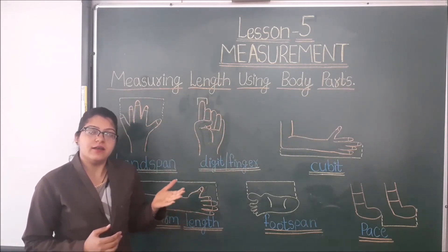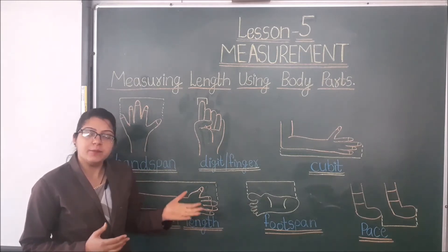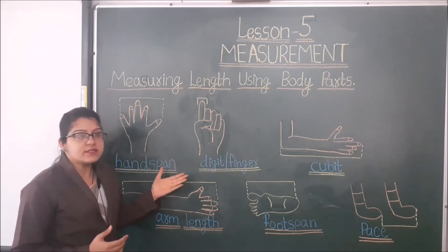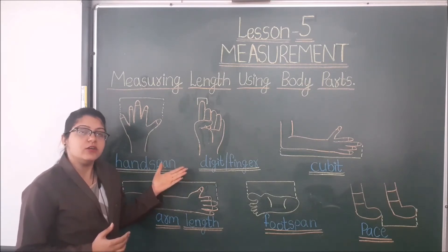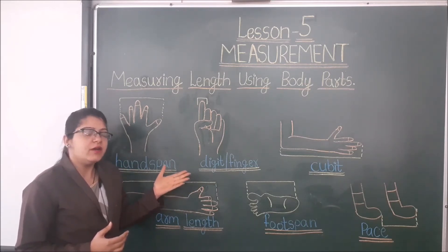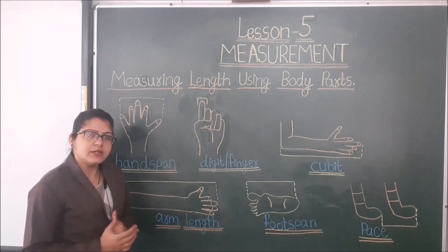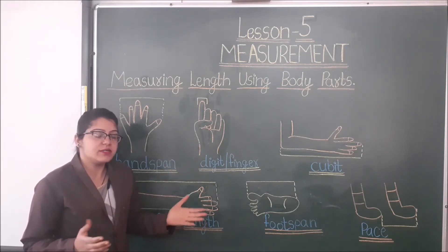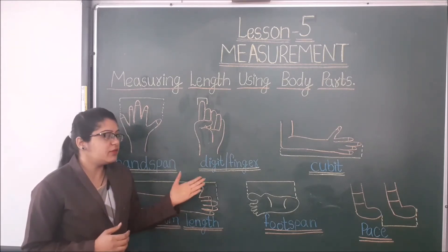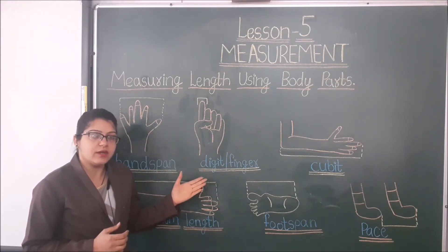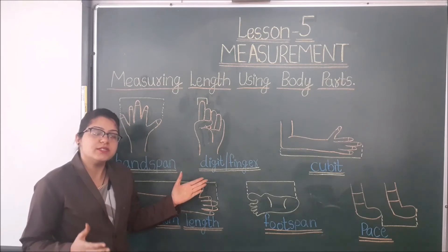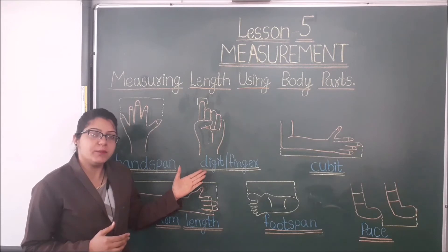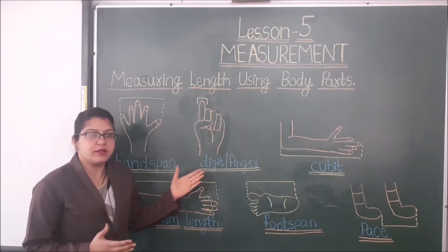Students, we can measure the length of anything with the help of our body parts. But these are non-standard units. These are the non-standard units of measurement. Why we are calling them non-standard units? Because they change from person to person. When we measure anything with the help of our body parts, it is a rough measurement.